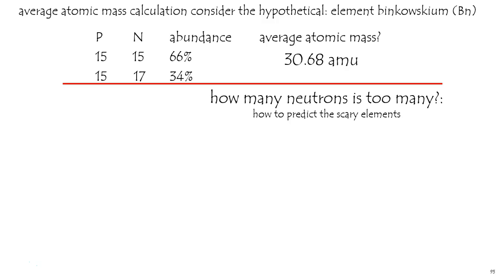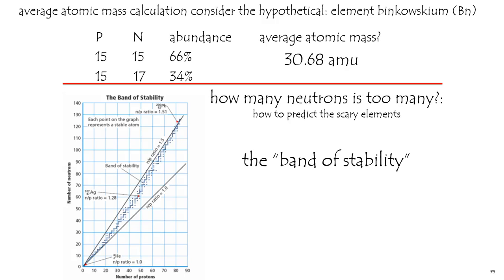How many neutrons is too many? Well, there is a case where you get too many, as we've said in another slide. 1.5 times as many neutrons as protons is just about all an atom can handle. So this is known as the band of stability, and here's the data that led to this conclusion.